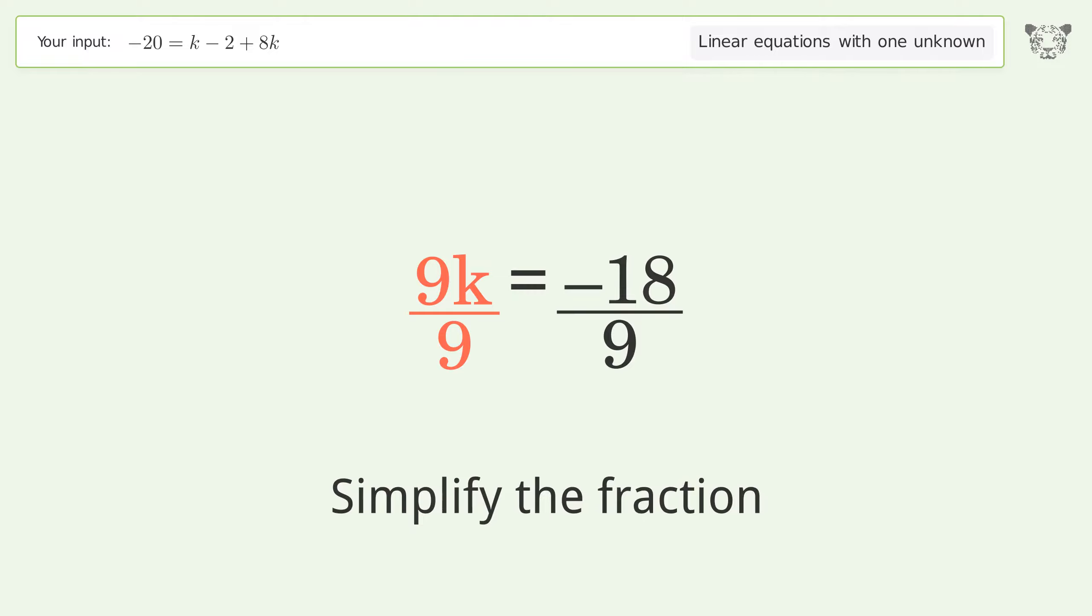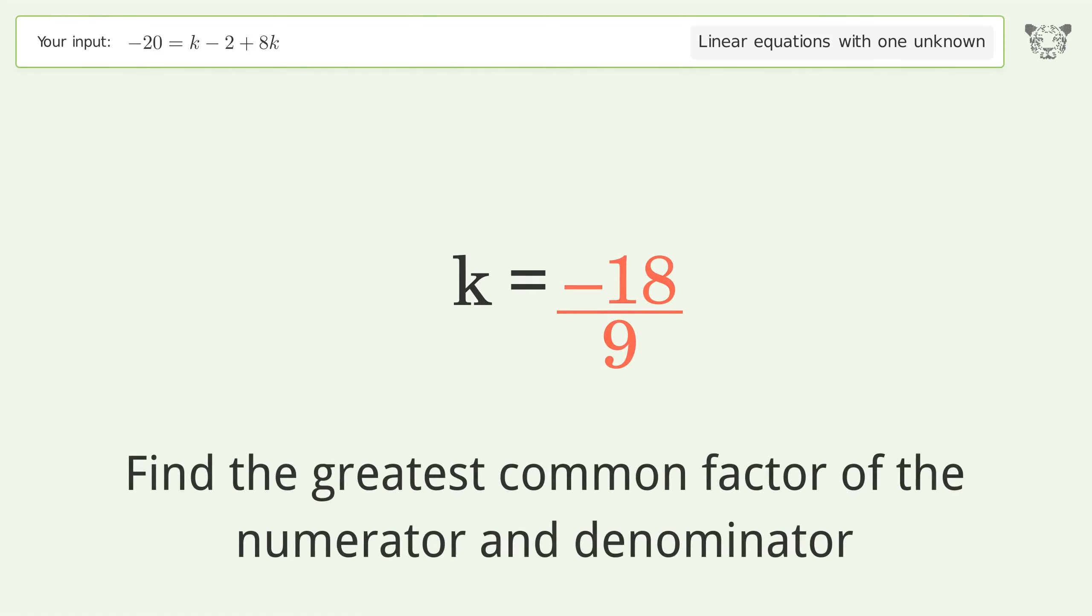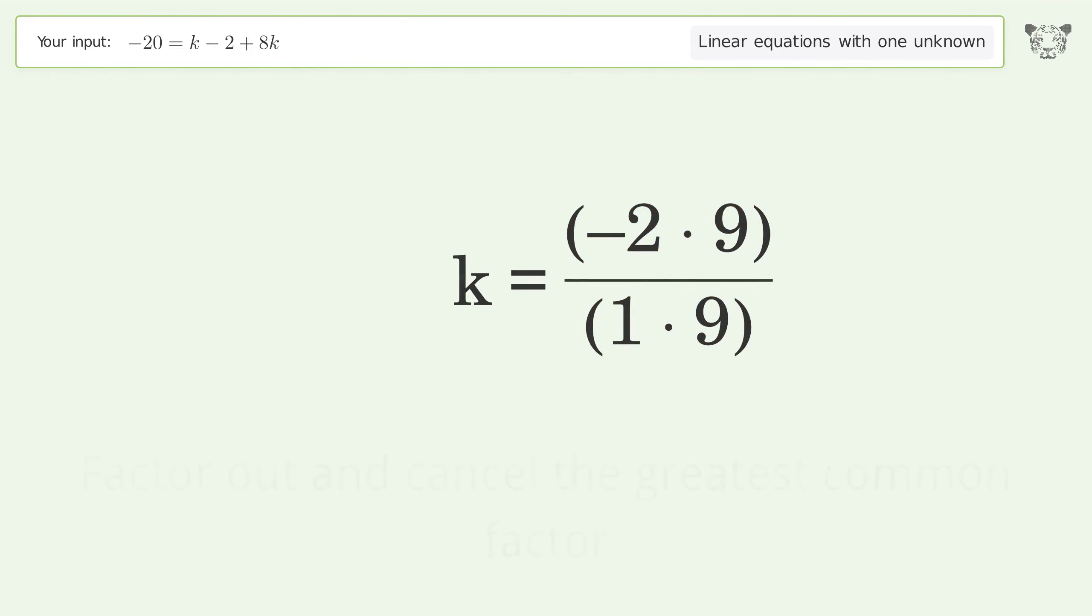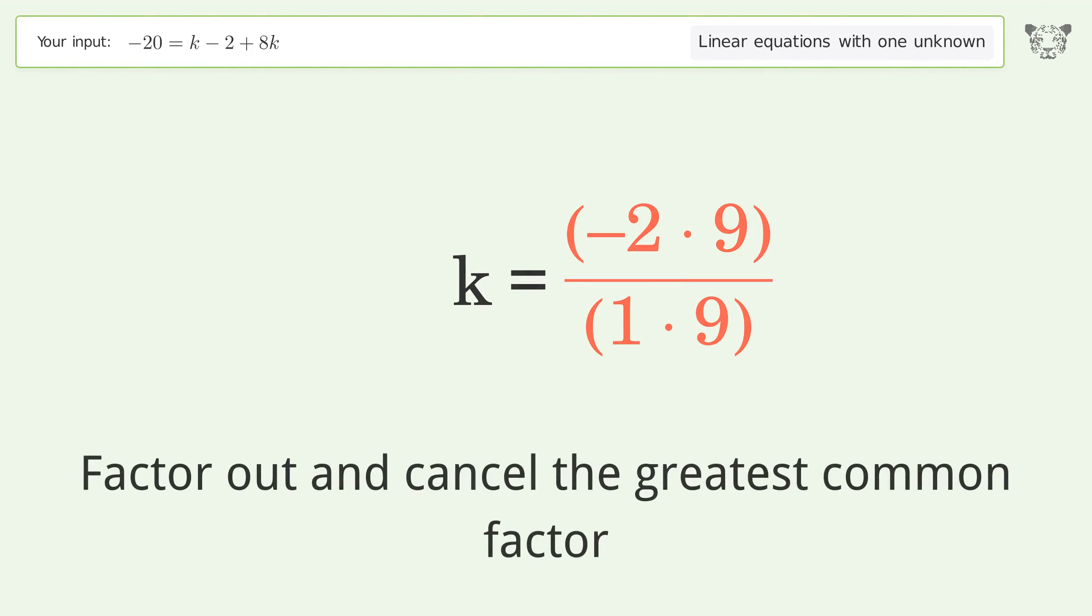Simplify the fraction. Find the greatest common factor of the numerator and denominator. Factor out and cancel the greatest common factor.